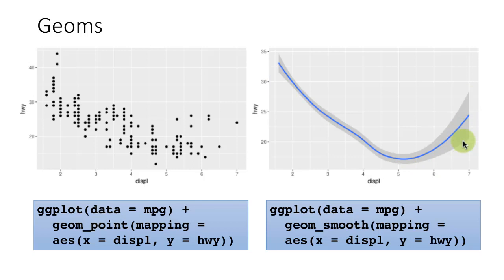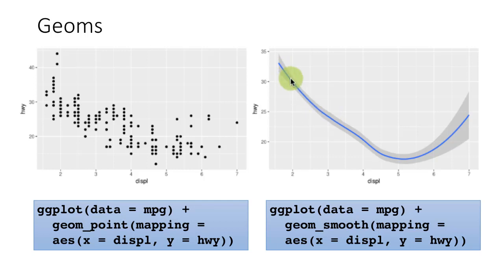The gray band you see around the line is essentially the 95% confidence interval. Although the smooth line gives you a point estimate at every point, there is a certain degree of uncertainty associated with that. The 95% confidence interval is shown with the gray band by default. If you don't want it, you can suppress it, as we will see shortly.